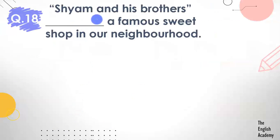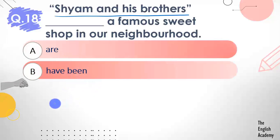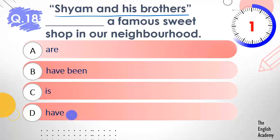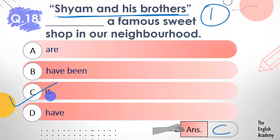Question number 18: Shyam and his brothers ___ a famous sweet shop in our neighborhood. Options: A) are, B) have been, C) is, D) have. The answer is option C — is. This is the name of a sweet shop, so it is treated as a single entity. Shyam and his brothers is a famous sweet shop — the shop name is singular, so we use a singular verb.